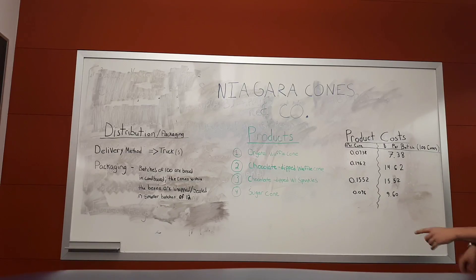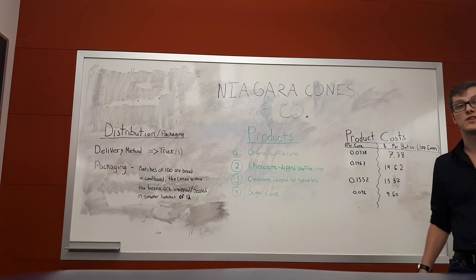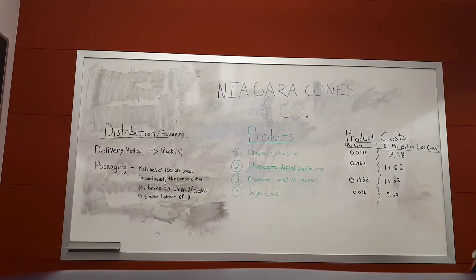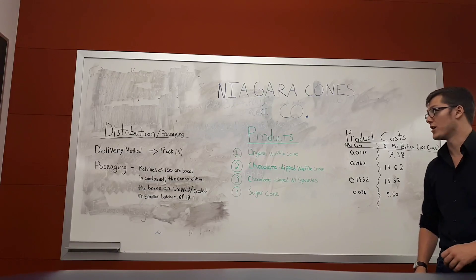Our most expensive cone, the chocolate dipped with sprinkles, comes out to $15.52 per batch, still only 15 cents per cone. The cost of the sugar cone is only $9.60 per batch, or 9.6 cents per cone.